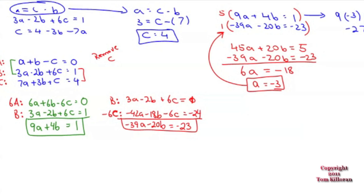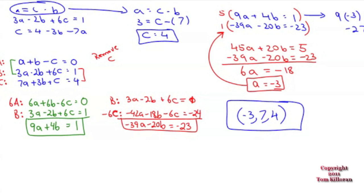There's our third answer. Getting them all together alphabetically — the point is a, b, c, just like x, y, z — gives us negative 3, 7, 4. That's the coordinate of intersection.